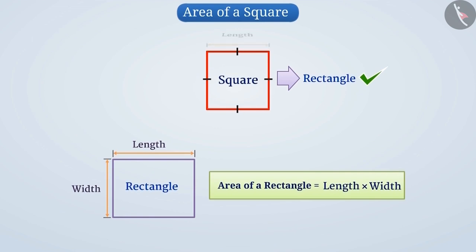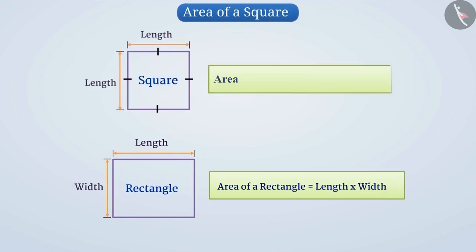Therefore, we can write the length of the side in place of the length and width. In this way, the area of the square can be written as side multiplied by side. Hence, the result obtained by multiplying the side of a square by itself is the area of that square.